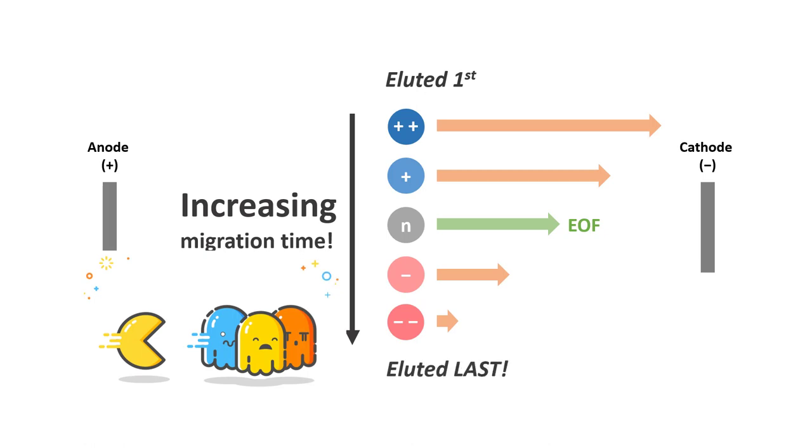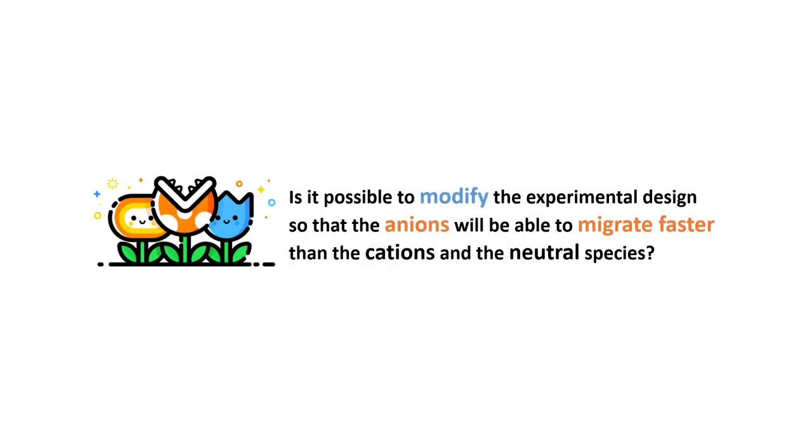To minimize the time required for the analysis, it makes more sense to reverse the migration order so that the anions are eluted first. So one last question of this lecture series would be, is it possible to modify the experimental design so that the anions will be able to migrate faster than the cations and the neutral species?